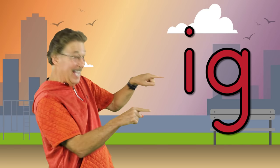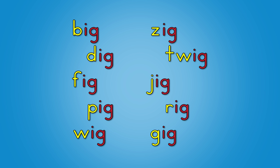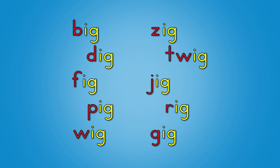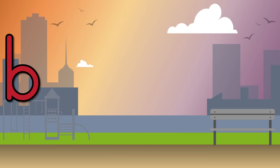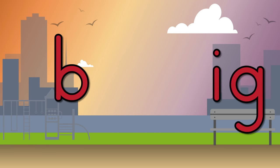Let's learn lots of words in the ig family. When you learn them, they can help you write and read. Each one is different as they begin, but they all have ig at the end. Look and listen and say the word: b-ig.